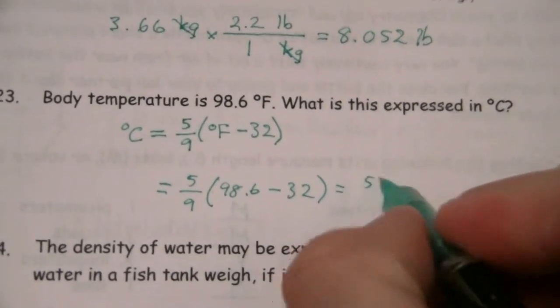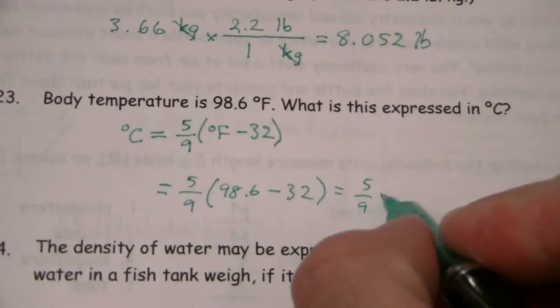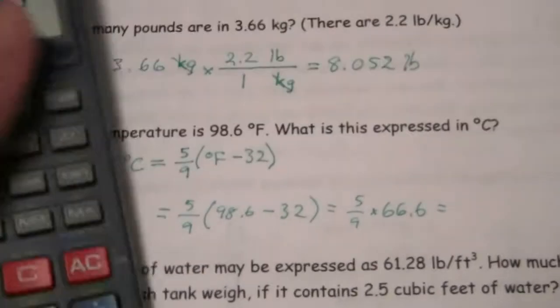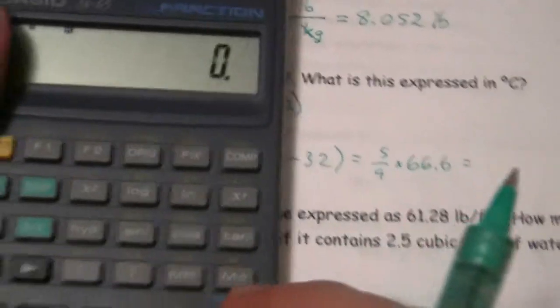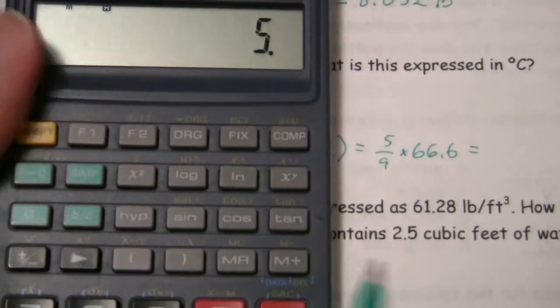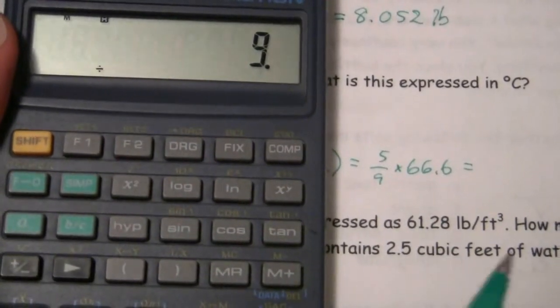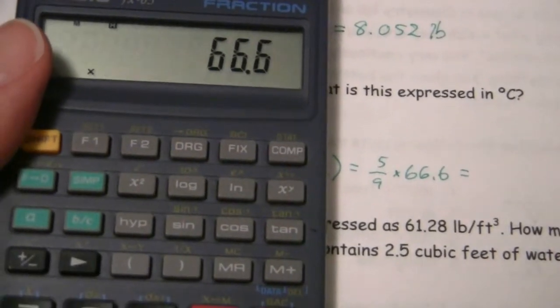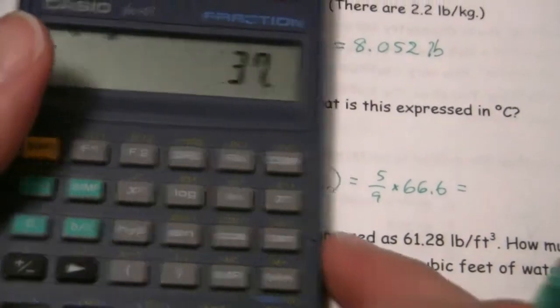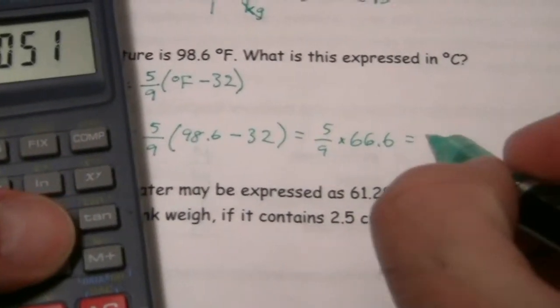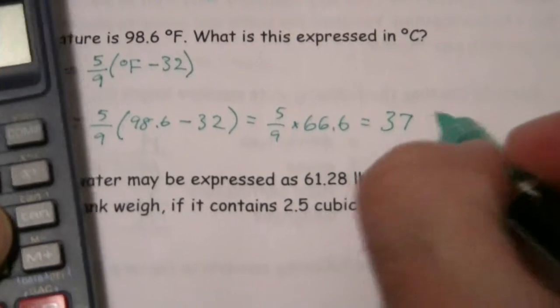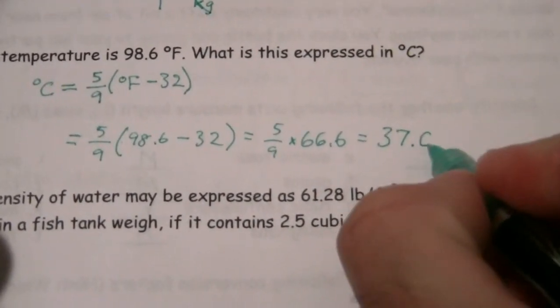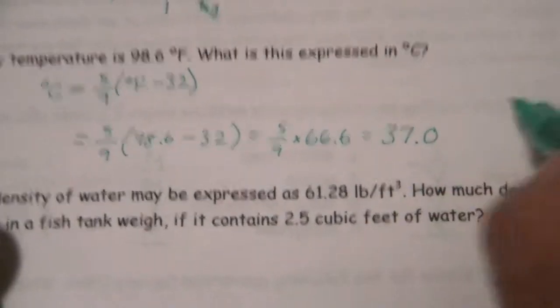So 5/9 times 66.6. And I can go ahead and calculate that on the calculator. 5 divided by 9 times 66.6. And I get an even 37.0 degrees. Since I was given three significant figures,